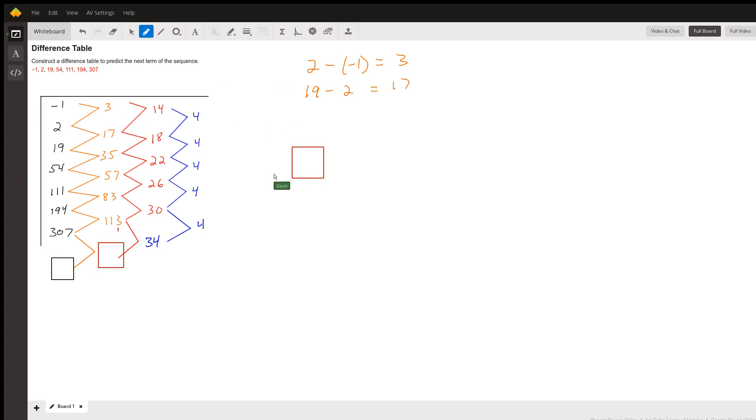that red square minus 113 equals 34. So all we have to do is add 113 to both sides. And what we get, these guys cancel out.